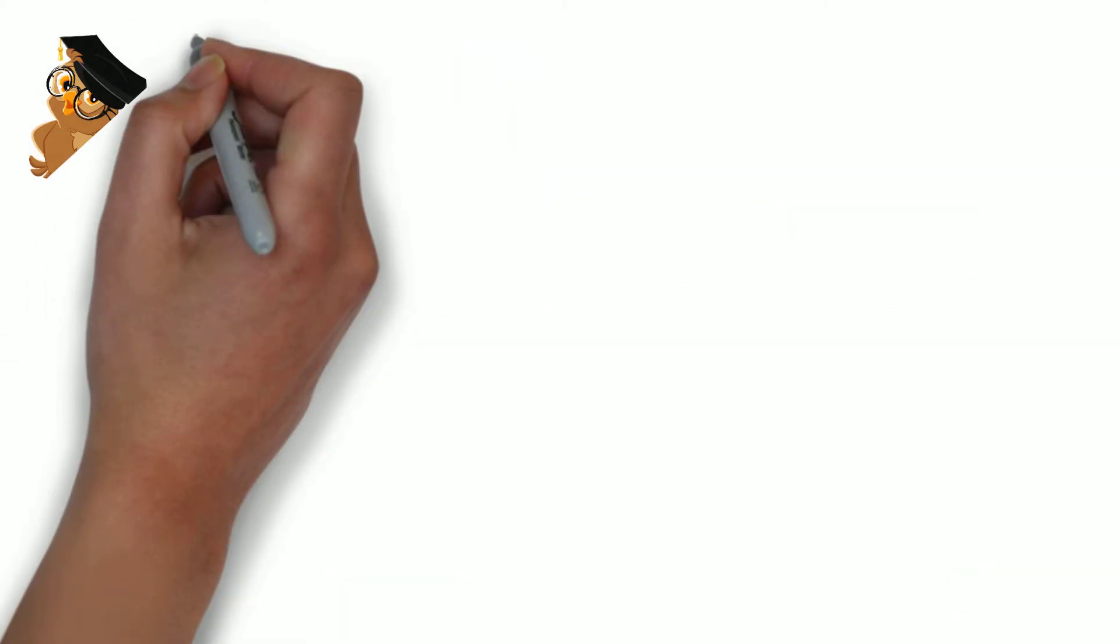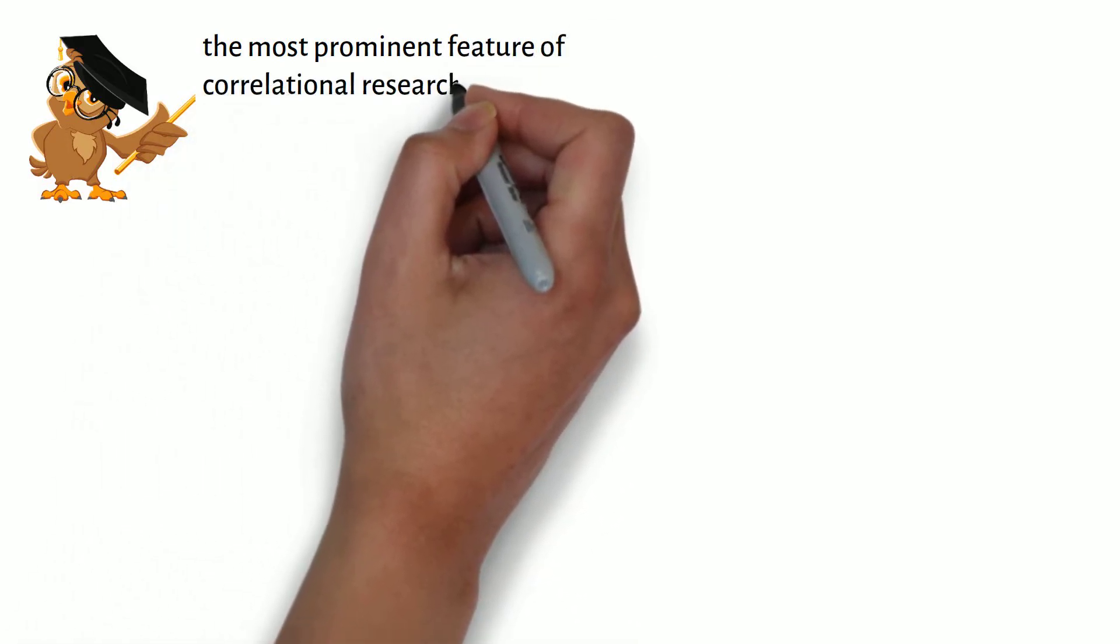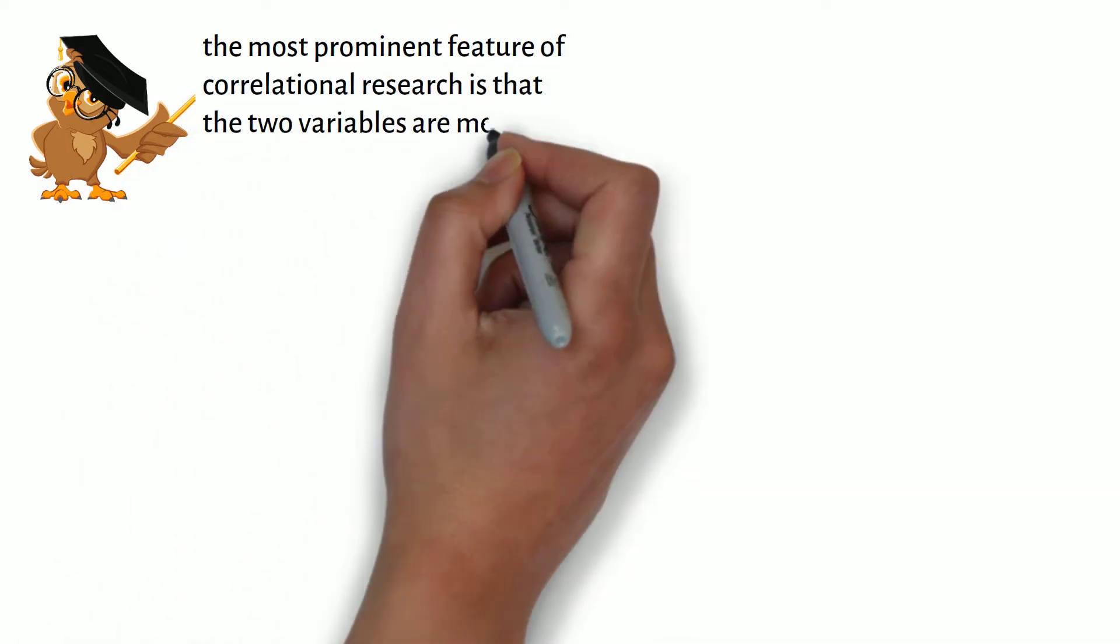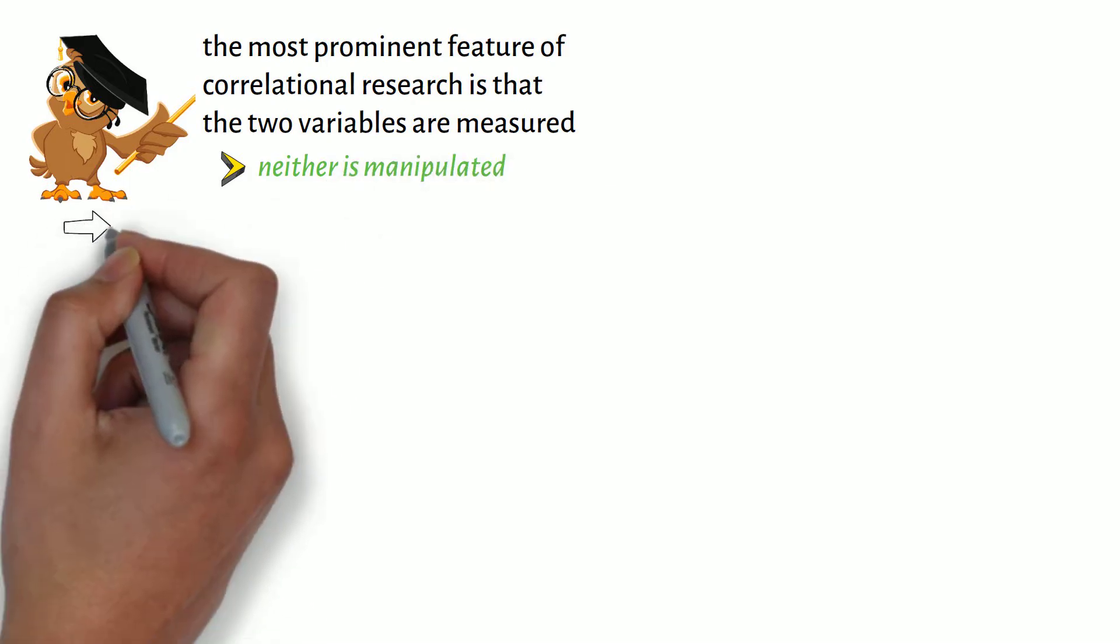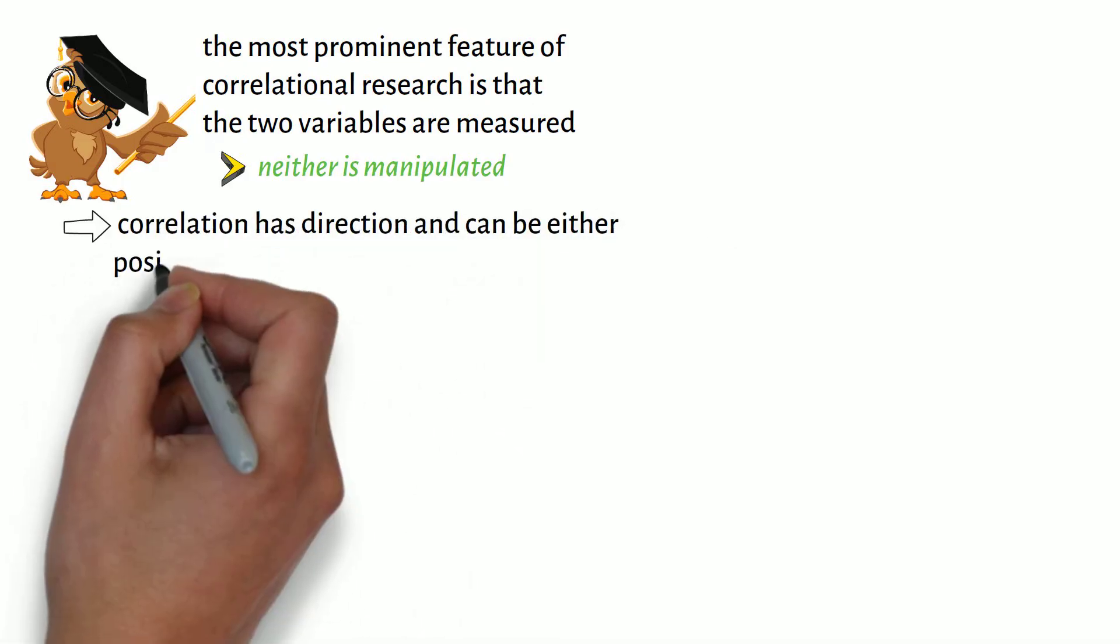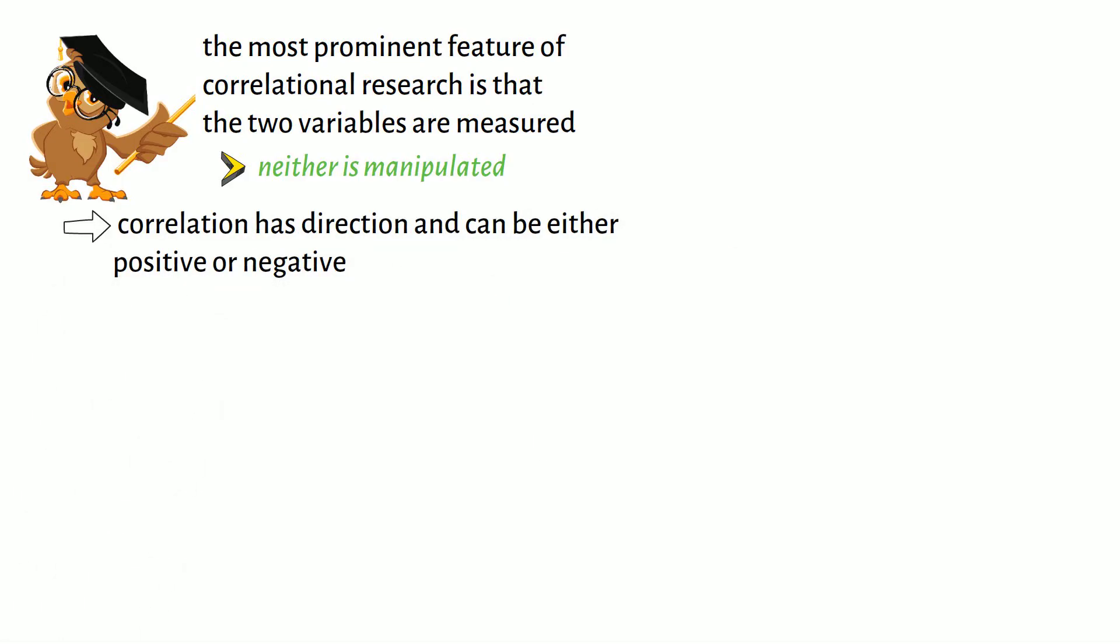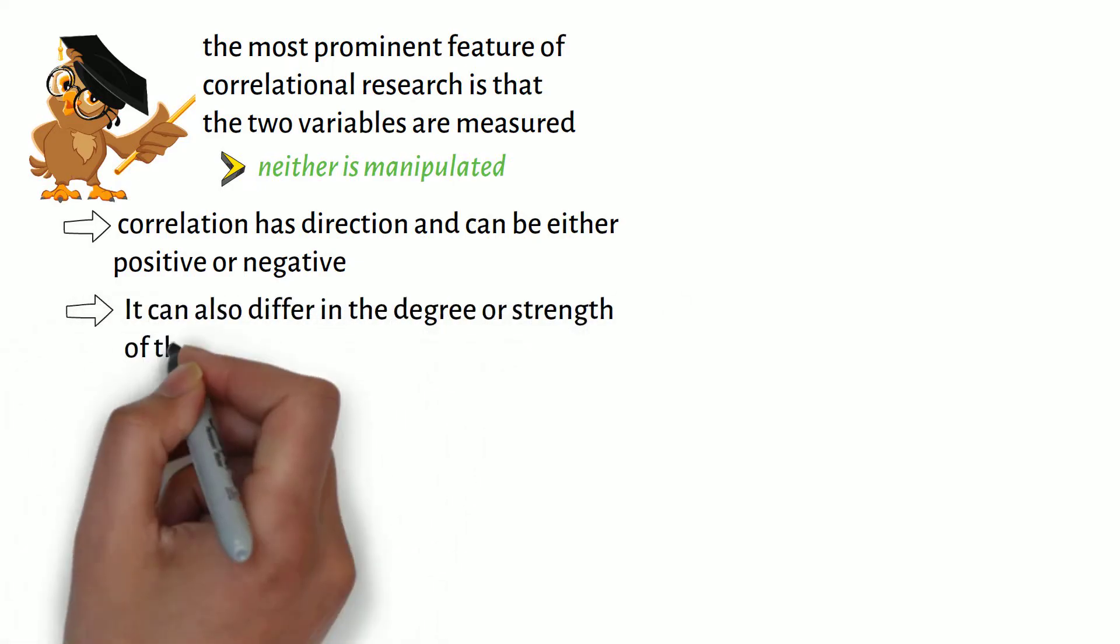It is important to note that the most prominent feature of correlational research is that the two variables are measured. Neither is manipulated. It is also important to note that a correlation has direction and can be either positive or negative. It can also differ in the degree or strength of the relationship.